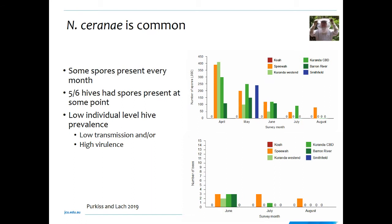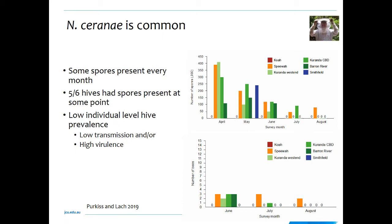When looking at the prevalence — how many bees in the hive were actually infected — for June, July and August, at most three out of 15 bees collected from a hive were infected. This tells us either transmission is really low and not many bees are getting sick, or there is really high virulence so bees get sick and die right away, and therefore it doesn't spread much and we also don't see too many infected bees.